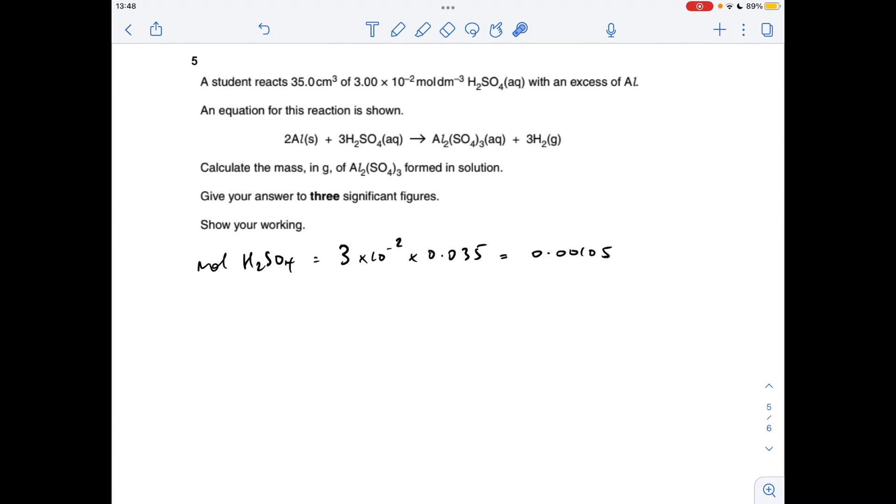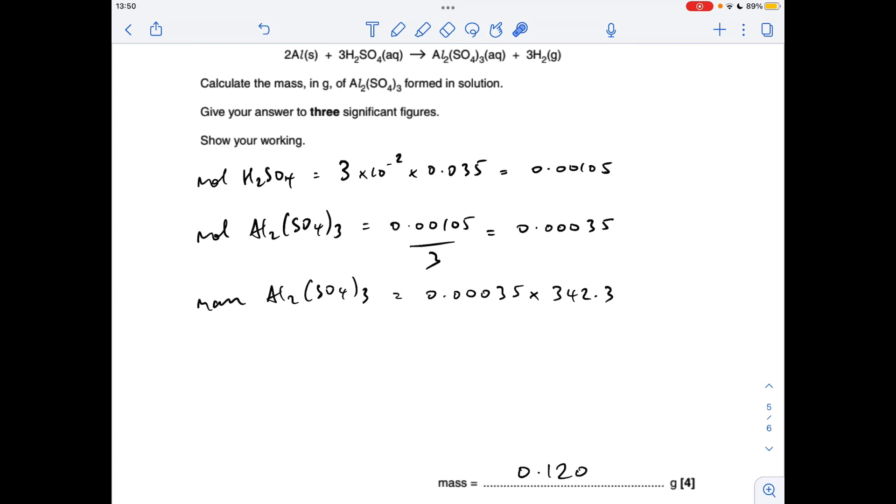Last question: so the first thing we do is work out the moles of sulfuric acid, concentration times volume in decimeters cubed, gives us that many moles there. The moles of aluminum sulfate formed, you can see from the ratio, is going to be a third of the moles of sulfuric acid, which gives us that number there. And then all we've got to do is multiply the moles of aluminum sulfate by its MR and give the answer to three significant figures, which comes out at a mass of 0.120 grams.